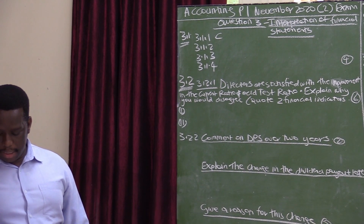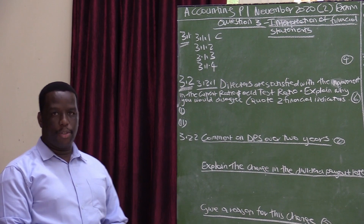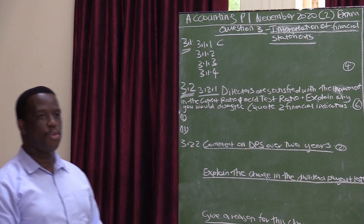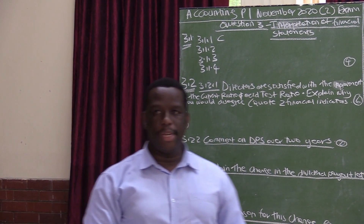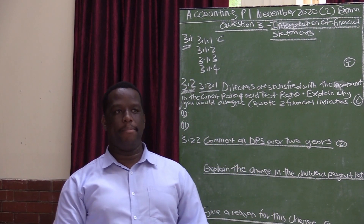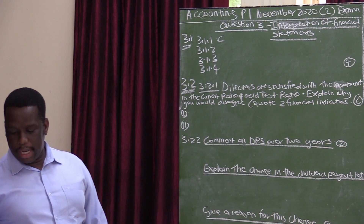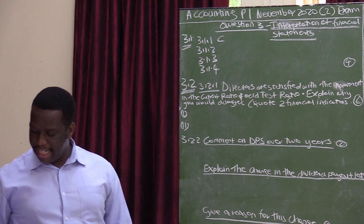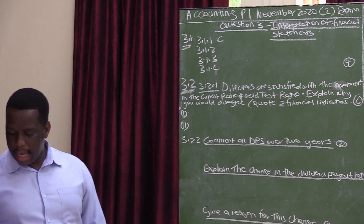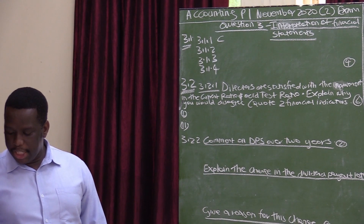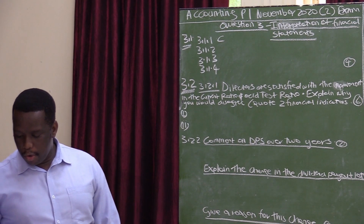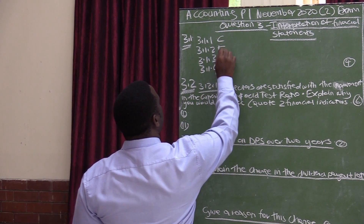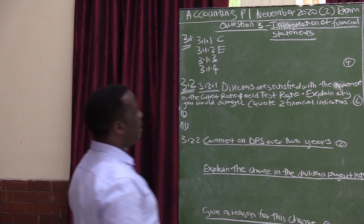3.1.2 is risk and gearing. Risk and gearing has got to do with loans — the borrowings, the long-term borrowings of the company. If you look at the best option for 3.1.2 it is option E, which says: how is the company managing loans or borrowed capital? So the correct answer for 3.1.2 is E.